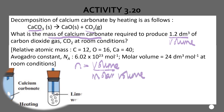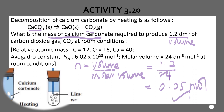The volume is 1.2 dm³ and the molar volume is 24 dm³ — same units. So you divide: 1.2 ÷ 24 = 0.05 moles. This step is worth one mark.